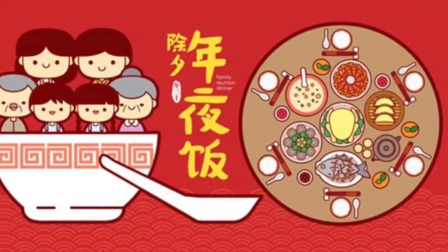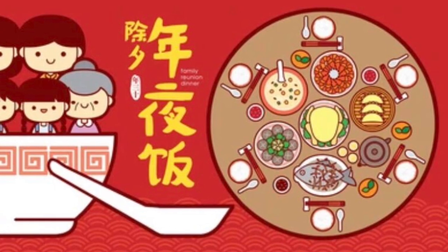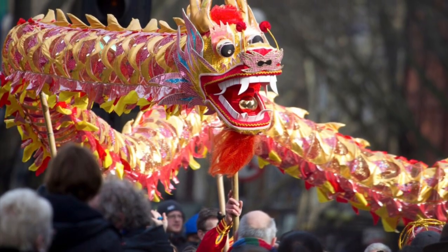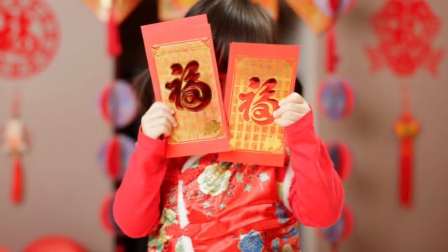Families gather and have dinner at a round table. They share yummy food such as dumplings and fish. The color red is used as a symbol of protection, and after dinner children receive red envelopes from their family with money inside.